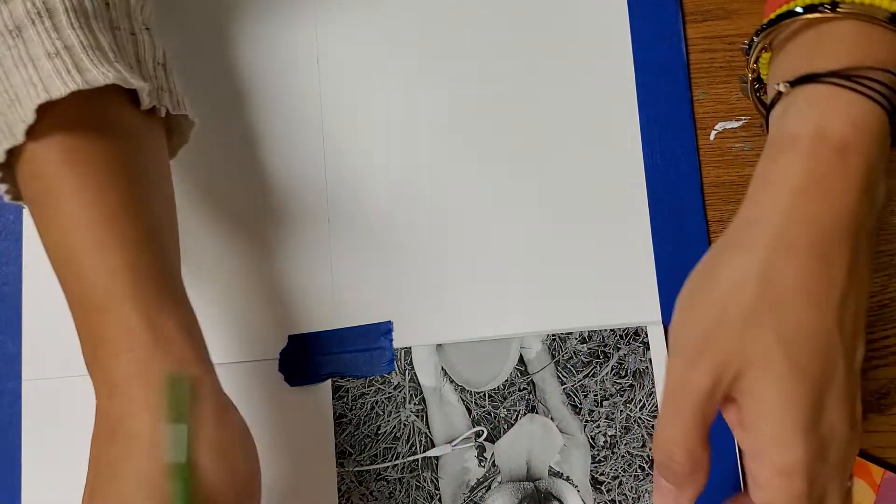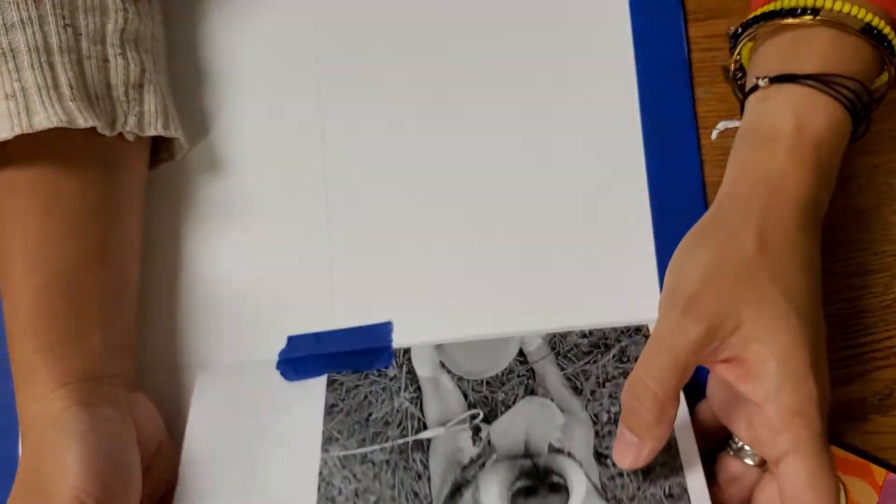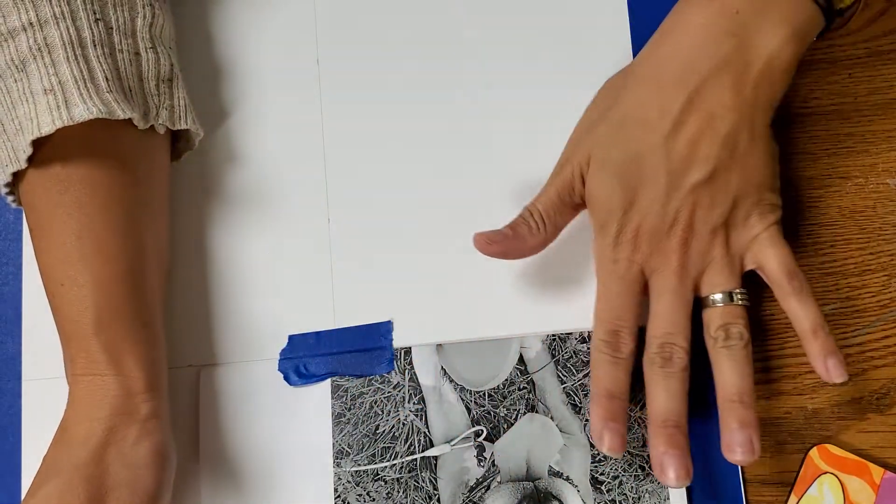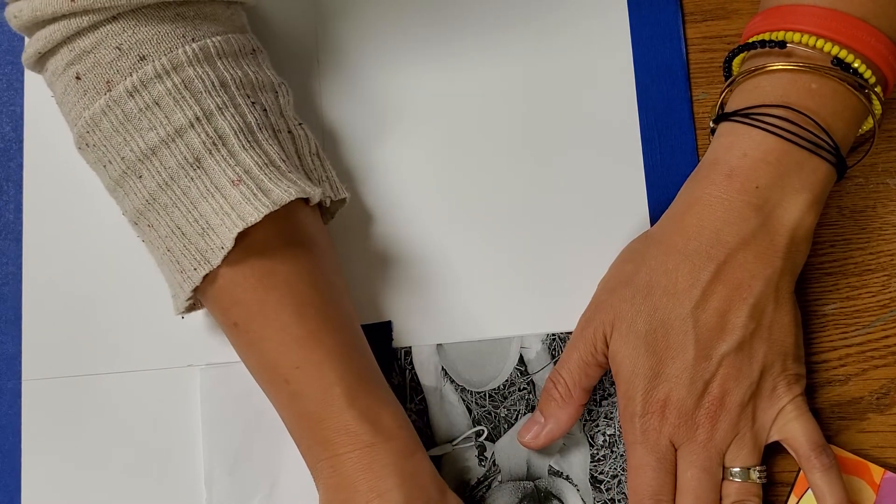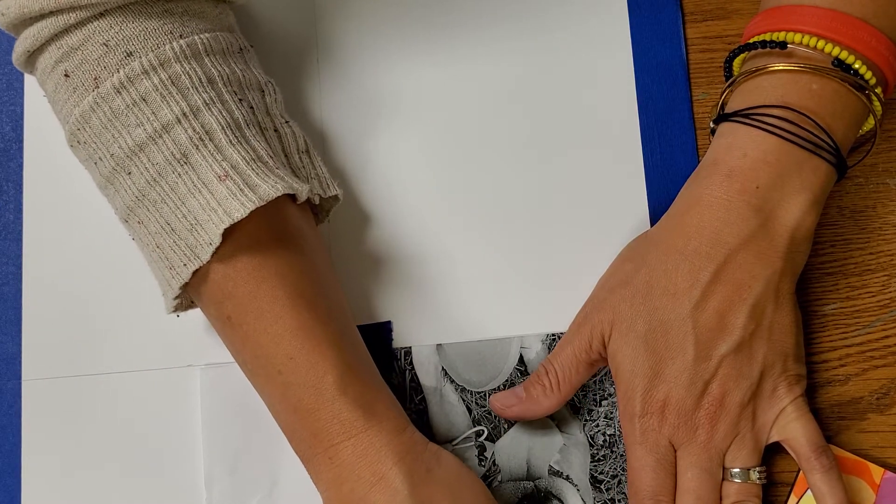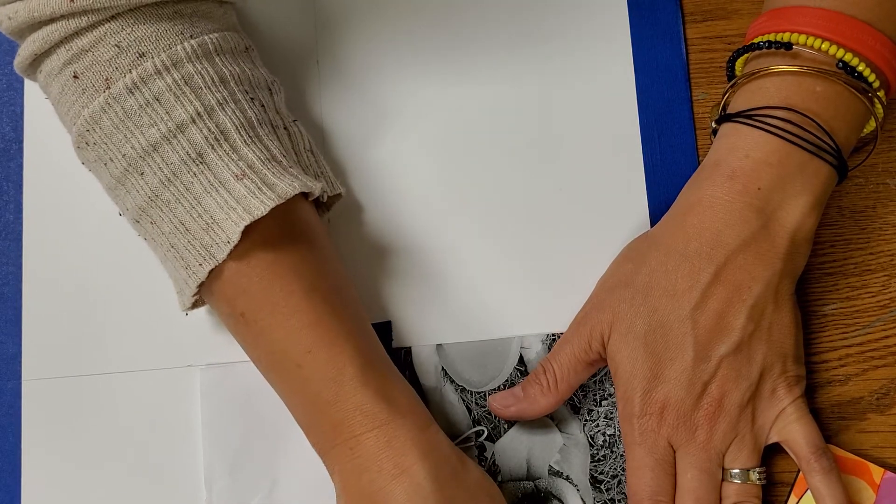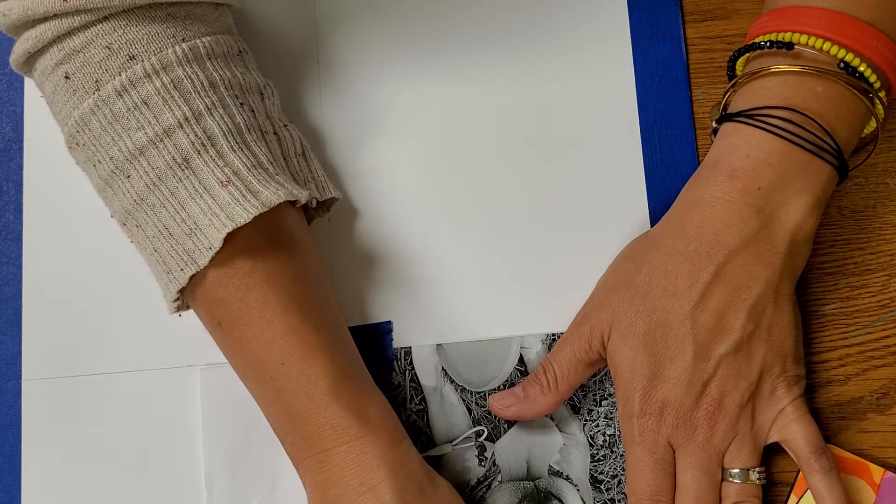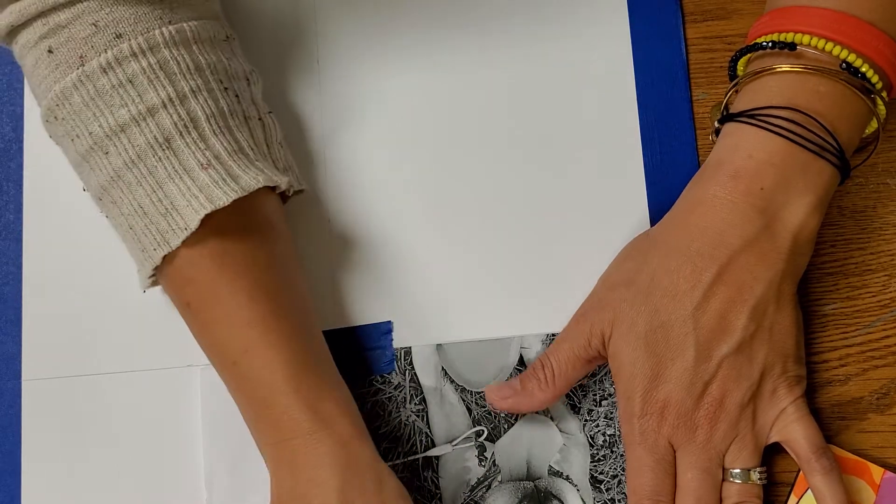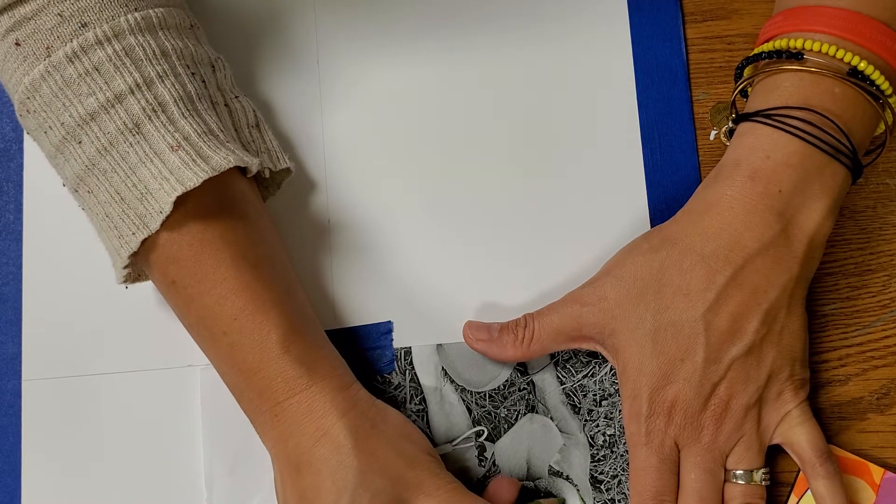So when you're done, if you think you're done, you can come back and be like, oh, I missed all that. Let me go back. That's why we tape it down. It's very important to tape it down. It's very important to go over all the lines, but we are contouring our facial features. We are not going to every detail. I'm just going over the main areas of my image.